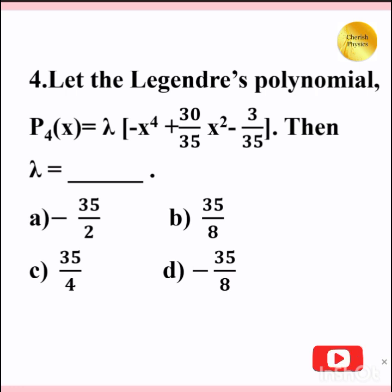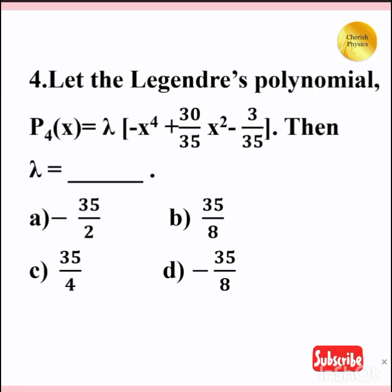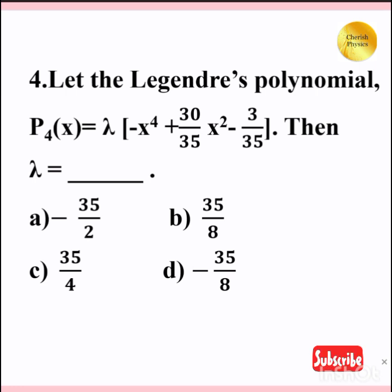Let the Legendre's polynomial P₄(x) equal lambda into (x⁴ + 30/35 x² minus 3/35). Then lambda is equal to — [blank].